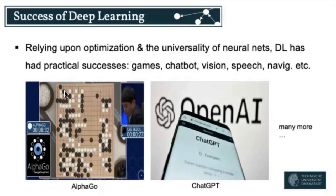What's also amazing is that it's all these different areas: games, chatbots, ImageNet with vision, speech, navigation — think of Google Maps. I'm using it all the time. It's amazing to see these technological advancements, and essentially they're all based on some kind of predictive AI model.